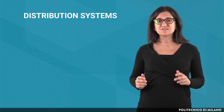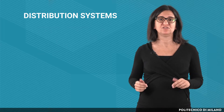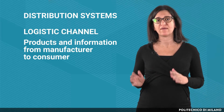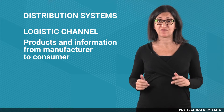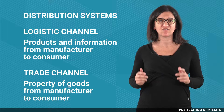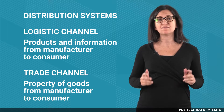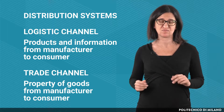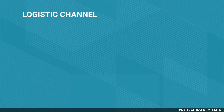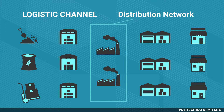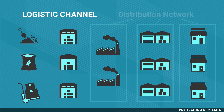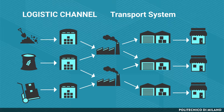A distribution system is made by the logistic channel, which allows the flow of both products and information from the manufacturer to the final consumer, and the trade channel, which is aimed at transferring the property of goods from the manufacturer to the final consumer. Focusing on the logistic channel, it includes the distribution network, whose nodes are the plants, warehouses and points of sale, and the transport systems that connect the nodes of the network.